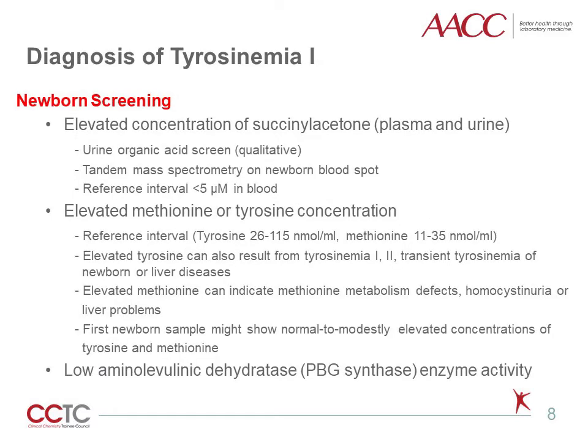During newborn screening, clinical laboratories require the qualitative measurement of succinylacetone in urine organic acid screen using gas chromatography mass spectrometry. Second-tier confirmation tests can be performed on newborn blood spots using tandem mass spectrometry, providing a concentration of succinylacetone, where elevations above a reference interval of 5 micromolar are indicative of tyrosinemia 1. Quantitative analysis by tandem mass spectrometry also provides concentrations of tyrosine and methionine in plasma. Elevated tyrosine can result from tyrosinemia 1, 2, transient tyrosinemia of the newborn, or other liver diseases; elevated methionine can indicate defects in methionine metabolism, liver problems, or homocystinuria.